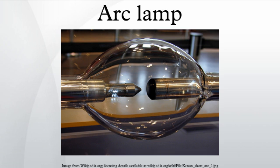The term is now used to refer to gas discharge lamps, which produce light by an arc between metal electrodes through an inert gas in a glass bulb. The common fluorescent lamp is a low-pressure mercury arc lamp. The xenon arc lamp, which produces a high-intensity white light, is now used in many of the applications which formerly used the carbon arc, such as movie projectors and searchlights.